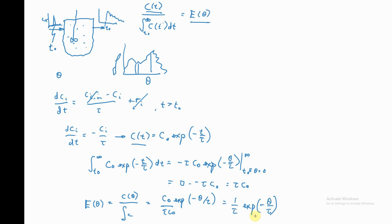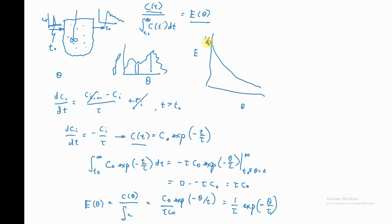That's the age distribution at the exit point of a CSTR. If you plot it, it's a simple exponential decay — E as a function of θ. At θ = 0, the value is 1/τ, and then it's an exponential decay after that. The reason for this shape is that in the CSTR, everything is exposed to the exit point, and as time goes on you are constantly equally exposed, so the probability of not having exited decreases exponentially.